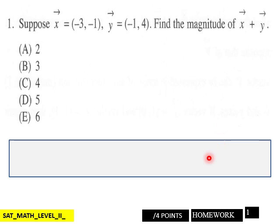We go into page one here of your homework. Suppose these vectors, find the magnitude of when you add these two vectors together. Four points for that.